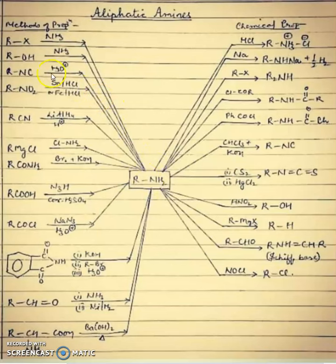You can make RNH2 through RX alkyl halides, alcohol, isocyanide, nitro groups with Sn/HCl, RCN with lithium aluminum hydride, RMgCl Grignard reagents with NH2Cl, and amide.